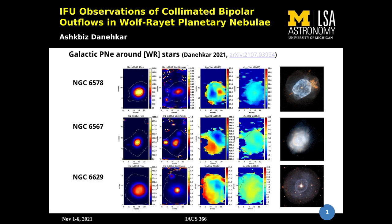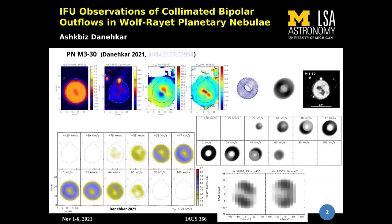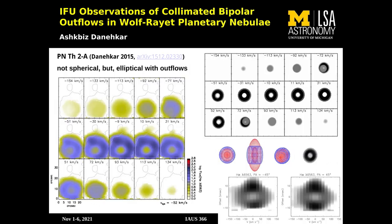Recent observations have found that a large sample of planetary nebulae have bipolar morphology, and we have not yet fully understood how this bipolar morphology forms. I recently conducted IFU observations of a planetary nebula around a Wolf-Rayet star, collected with the Australian National University 2.3-meter telescope.